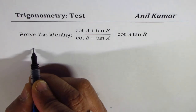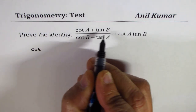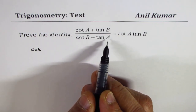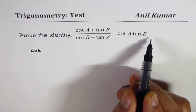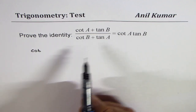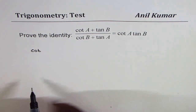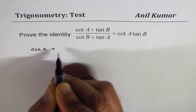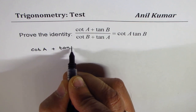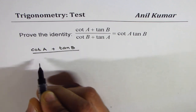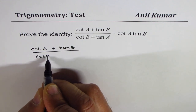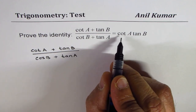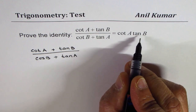We are given the identity: cot A plus tan B, divided by cot B plus tan A, equals cot A tan B. We have to prove this identity as given to us.